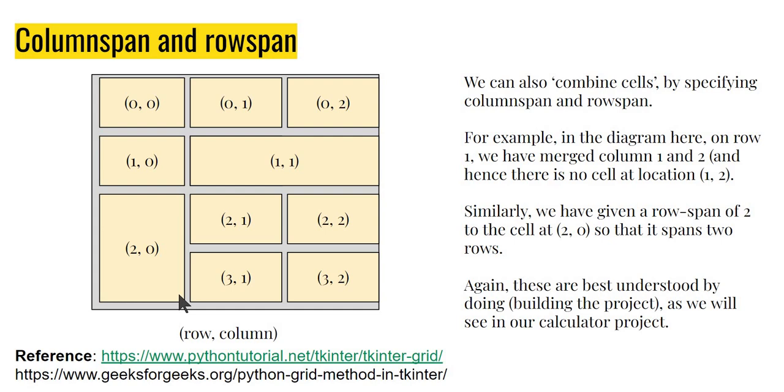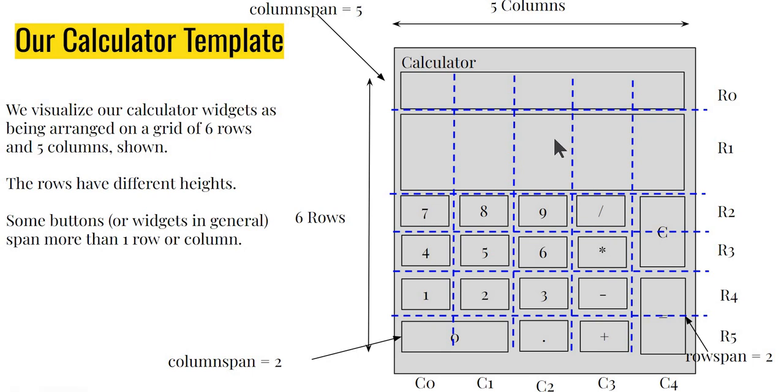But let's just briefly see how this applies to our calculator. Well, remember, our calculator has this expression label, has this entry label, has a bunch of buttons. In fact, you can see that this is a grid of six rows and five columns.